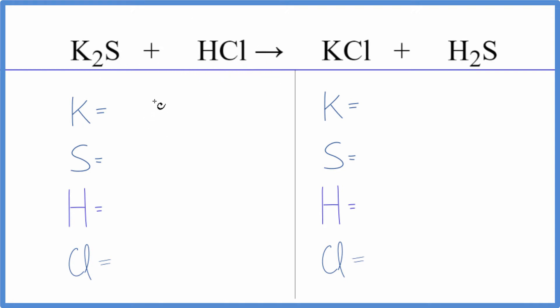Let's add the atoms up and balance the equation. We have two potassium atoms, one sulfur, and then one hydrogen and one chlorine. Product side, we have one potassium, one sulfur, two hydrogen atoms, and one chlorine atom.